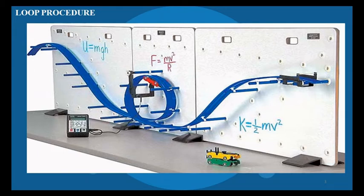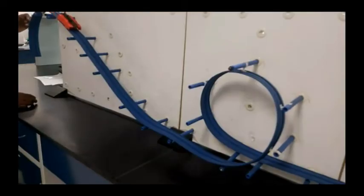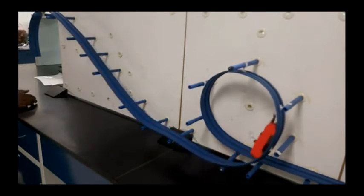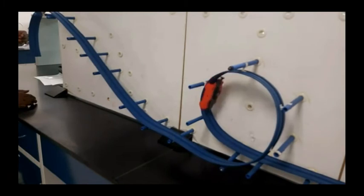Loop procedure. Configure the track as shown in the figure above. Attach a photo gate at the top of the loop. Put the catcher on the end of the track to keep the car from going off the end. Put a bike in the center of the loop.